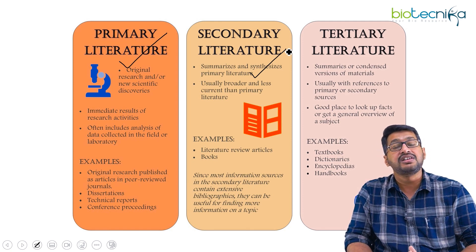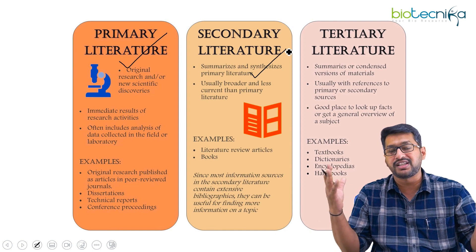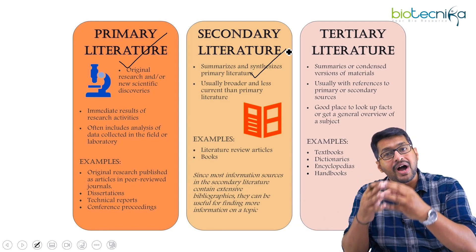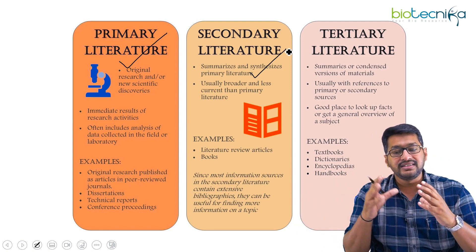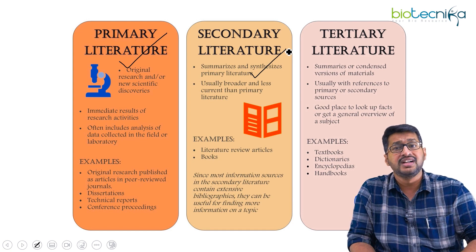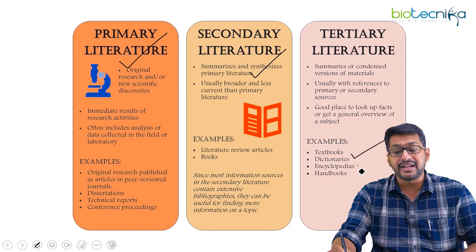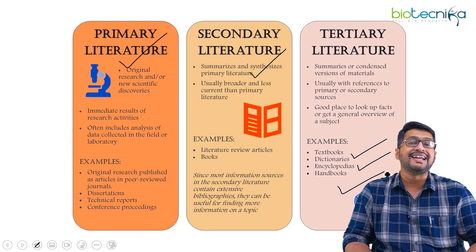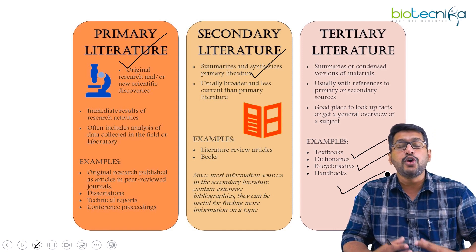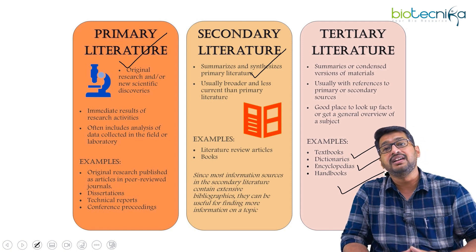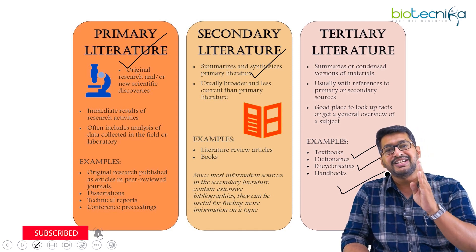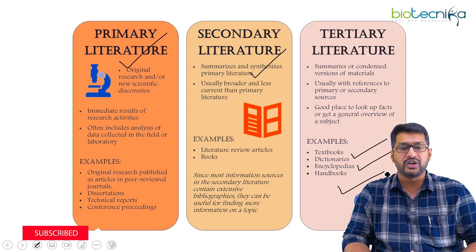The third category is tertiary literature. In tertiary literature, you are summarizing a huge component spanning the last ten years, which is a result of primary and secondary research work. You compile this into one condensed piece. Classical examples include textbooks, encyclopedias, handbooks, and dictionaries. So before selecting what kind of scientific paper you want to publish, you need to determine whether you have primary, secondary, or tertiary data in hand.